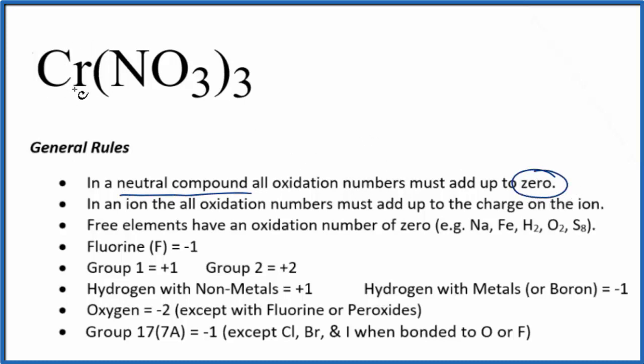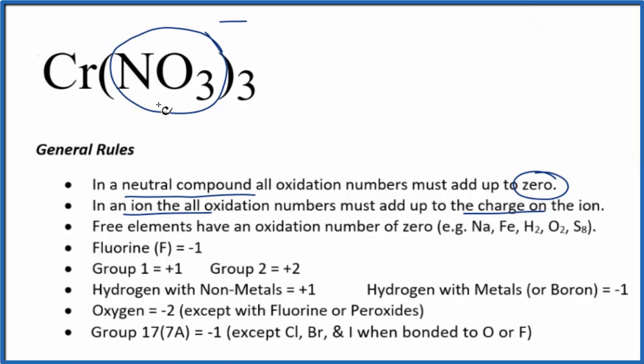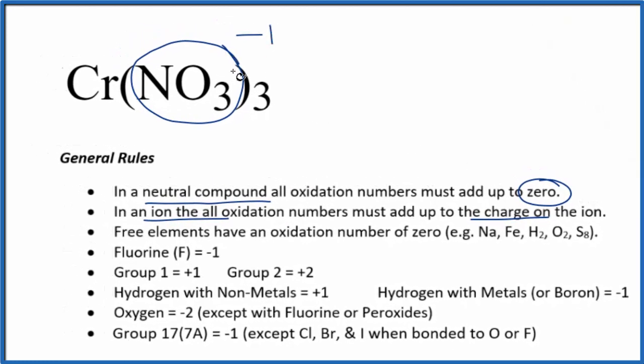For chromium, we don't know its oxidation number. We have to look at what it's bonded to. The nitrate ion, NO3, has a 1 minus ionic charge. When we have an ion, the oxidation numbers all add up to that charge, so the oxidation numbers here add up to minus 1.